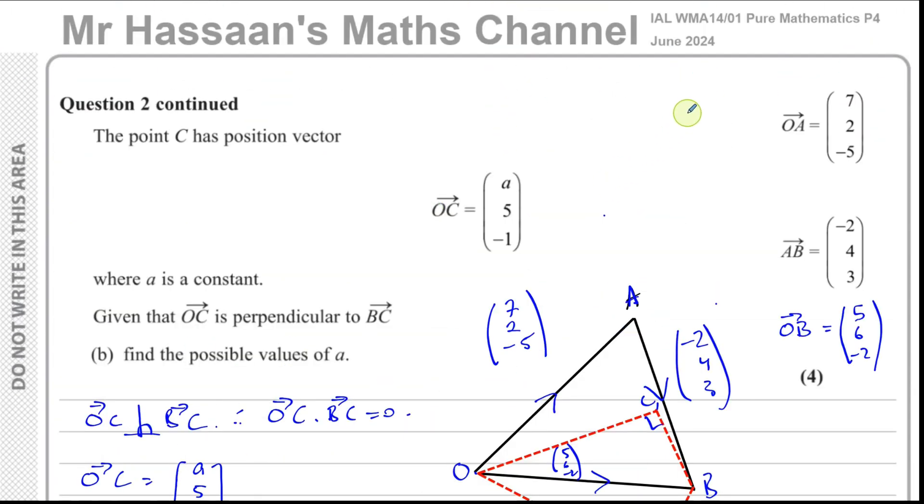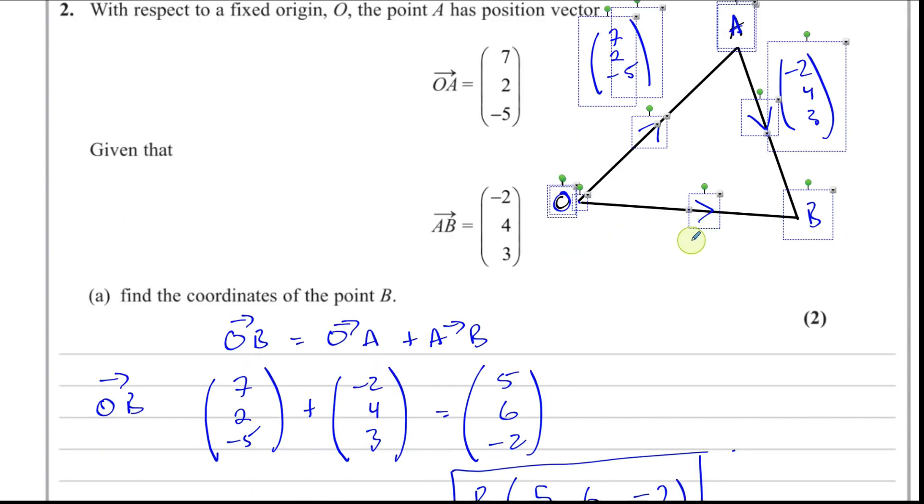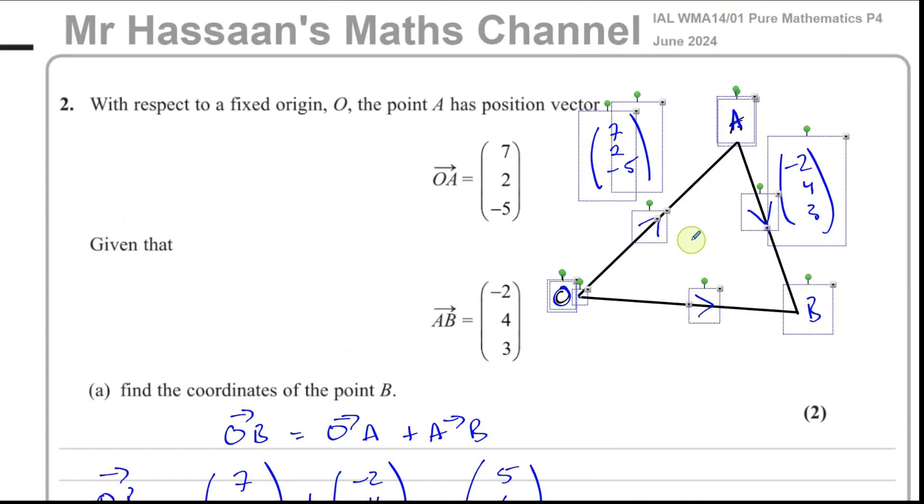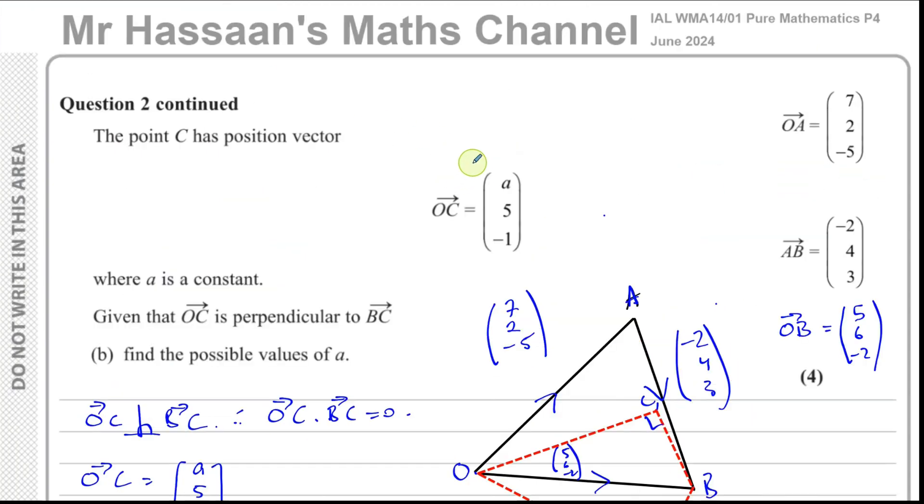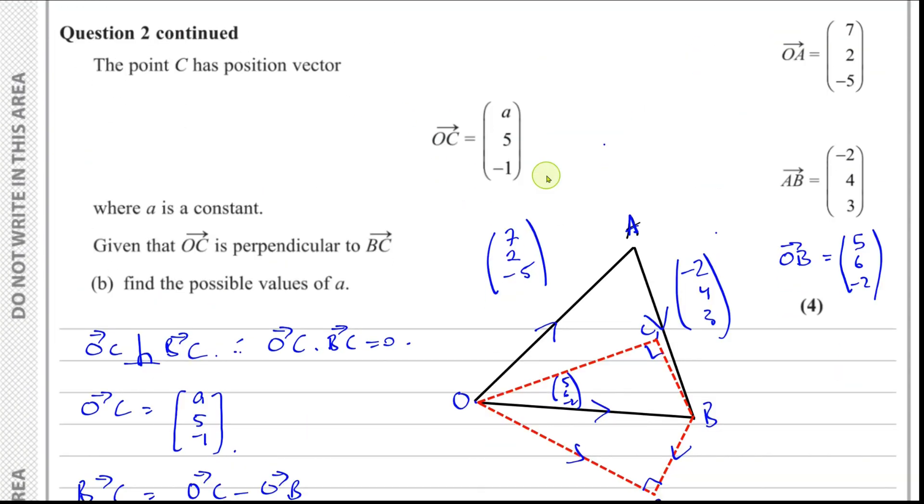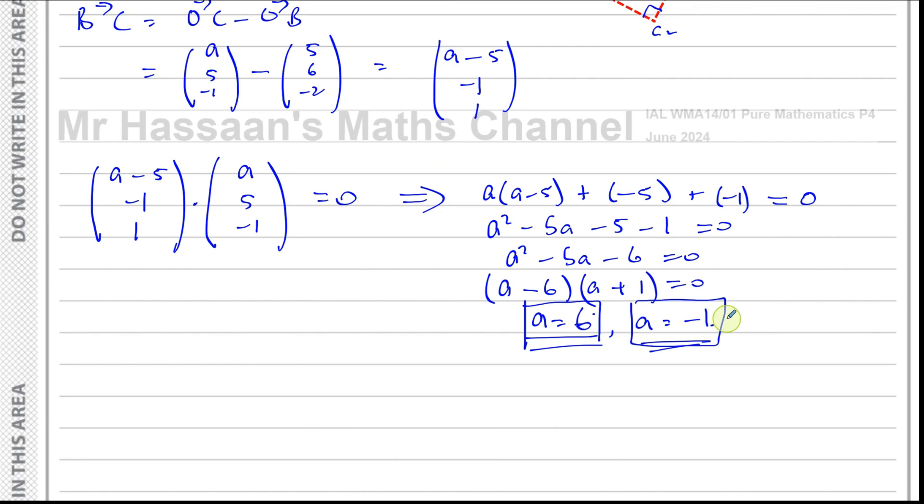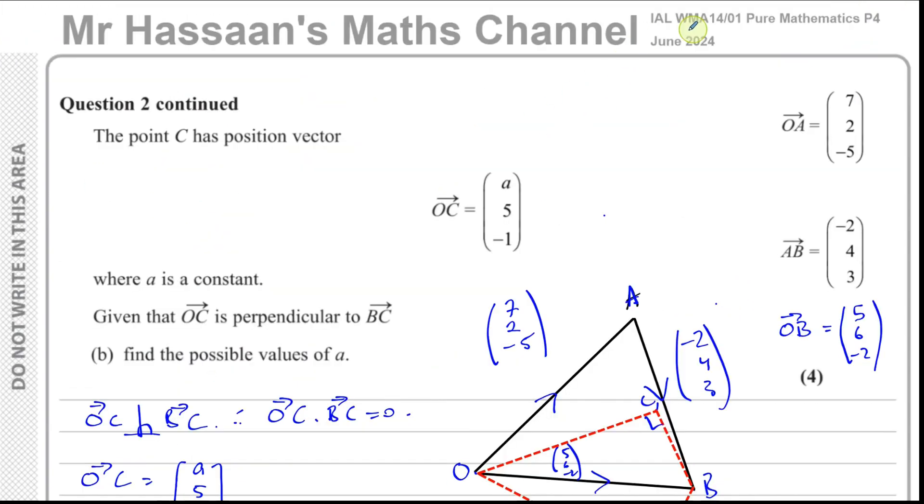That concludes this question from the June 2024 paper. Just a comment that I got - this is not actually part of this question. There's no vector equation of a straight line, so I'll answer that when I get to a question like that. That's going to come up later. That concludes this question from this paper. Other questions from this particular paper will be found in the playlist that will appear on the top right of the screen at the end of this video.